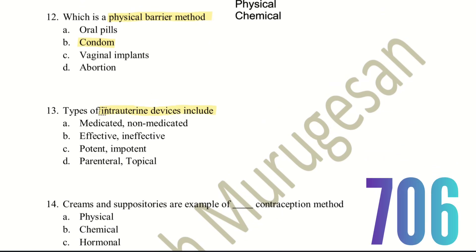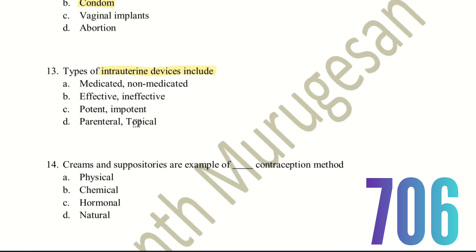Thirteenth question: types of intra-uterine device include? The choices are medicated or non-medicated; effective or ineffective; potent or important; parental or topical. Intra-uterine devices have two types — medicated and non-medicated. These are the types of intra-uterine devices.